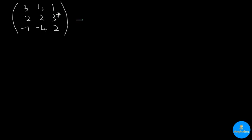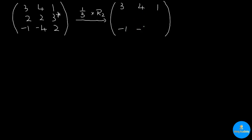The first thing we need to do is to multiply the reciprocal of the pivot entry, which means 1 third, to the pivot row, which means R2. The first row and the third row are not changed, so I'm going to copy them. As for the second row, one third is multiplied to every single entry, so we will get 2 over 3, 2 over 3, and 1.